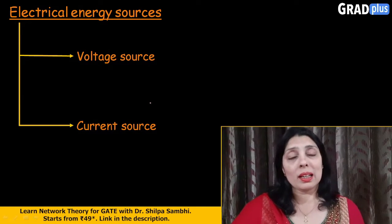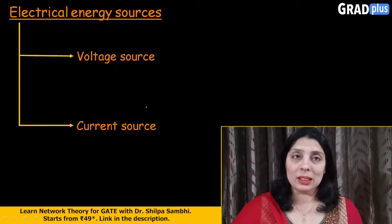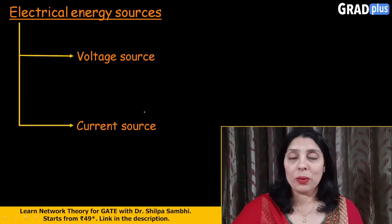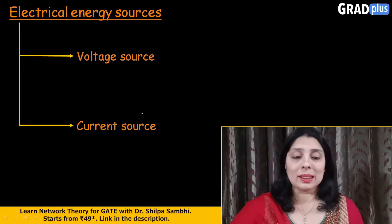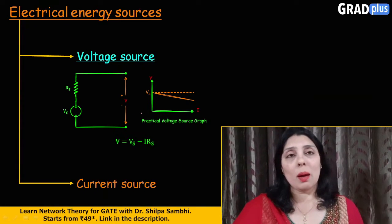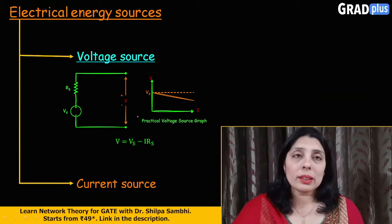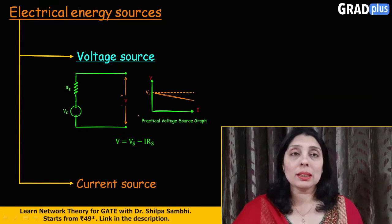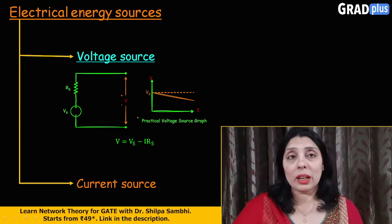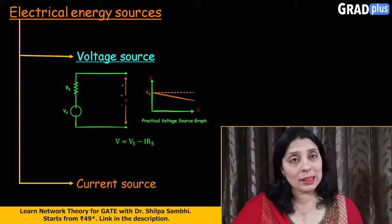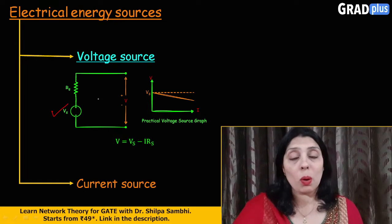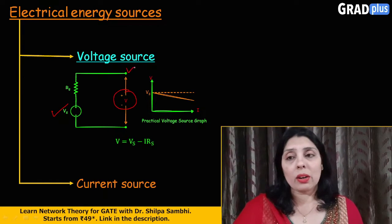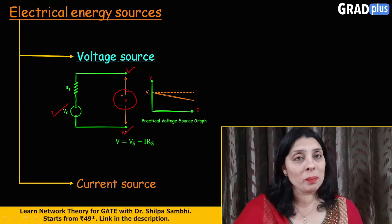So we have studied two types of electrical energy sources, the voltage source and the current source. Let's quickly get an overview of both the sources and understand what is ideal in these two cases. If we talk about the voltage source first, voltage source is some device which is supposed to give constant voltage across the terminals. As you can see in this small circuit here, this voltage source Vs must provide the constant voltage V across these terminals.